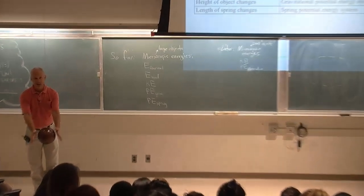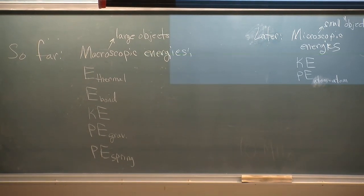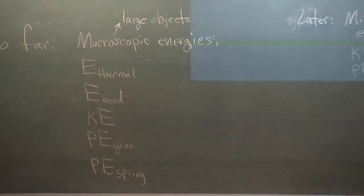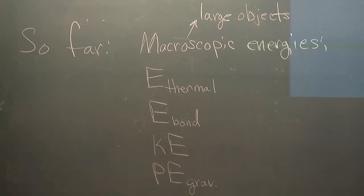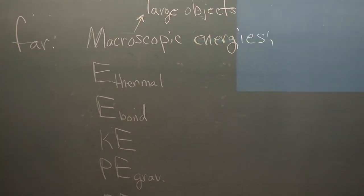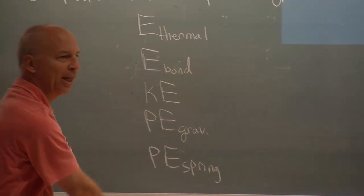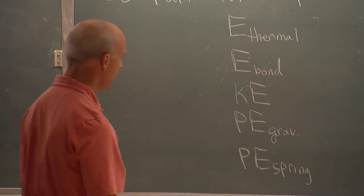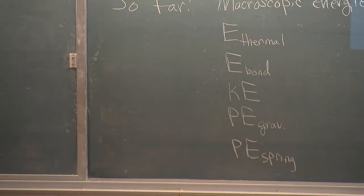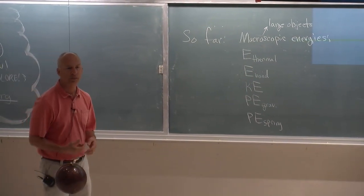We talked about the energies of those kinds of large objects. For those things we've talked about internal energies — the energies that are somehow inside there. We're going to see that those are energies of all those particles. Bond energy is a macroscopic word that we've been using. Kinetic energy is the energy of a macroscopic object that happens to be moving. Gravitational potential energy is the energy of interaction between an object, the Earth, and another object — in this case the bowling ball.